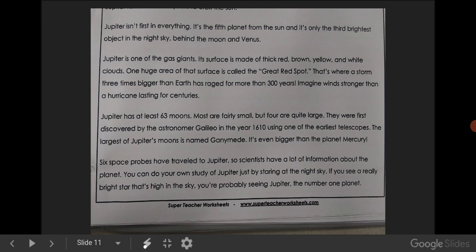Jupiter is one of the gas giants. Its surface is made of thick red, brown-yellow, and white clouds. One huge area of that surface is called the Great Red Spot. That's where a storm three times bigger than Earth has raged for more than 300 years. Imagine wind stronger than a hurricane lasting for centuries.